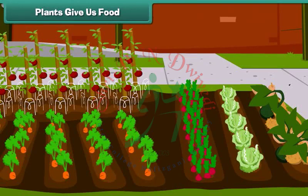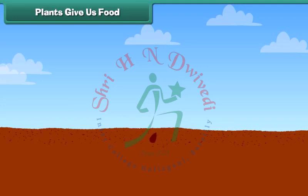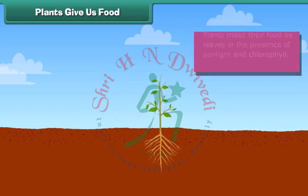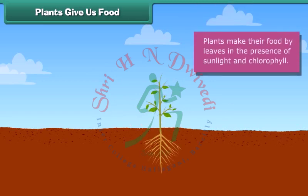Dear friends, as we know that plants are an important source of food. They give us fruits, vegetables and cereals. You will be surprised to know that these plants also need food to grow. They prepare food by their leaves in the presence of sunlight and chlorophyll.